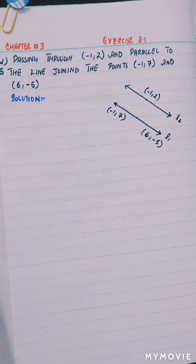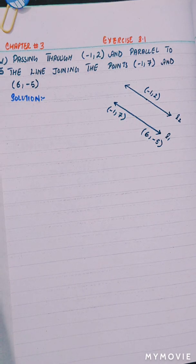Hello everyone, this is Rabi Aslam. In this video, we will solve question number 5, parts 5 and 6 from exercise 3.1, chapter number 3. Part 5 is passing through and parallel to the line joining the points.